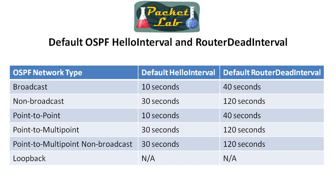IOS is going to assign a default Hello Interval and a default Router Dead Interval based on the OSPF network type. This is a table that you're going to want to memorize for your studies because these will come up in Cisco exams and in the real world. You only have to memorize the default Hello Interval because the default Router Dead Interval is always going to be four times that. Broadcast and point-to-point OSPF network types have a default Hello Interval of 10 seconds and a default Router Dead Interval of 40 seconds. Loopbacks don't send out Hello packets at all. All the rest have default Hello Intervals of 30 seconds and a default Router Dead Interval of 120 seconds. With a non-broadcast OSPF network connection you're going to wait two minutes before you declare a neighbor down, whereas with broadcast you'd wait 40 seconds.